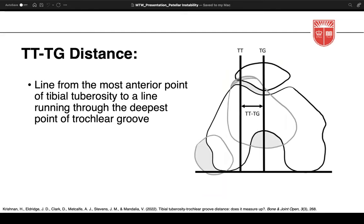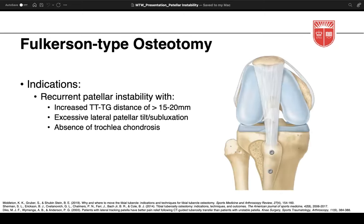The TT-TG distance is found by drawing two lines — one through the anterior most portion of the tibial tuberosity and another through the deepest portion of the trochlear groove. A more lateralized tibial tuberosity with an increased TT-TG distance suggests an increased lateral force vector on the patella. Indications for a Fulkerson osteotomy: recurrent instability with an increased TT-TG distance greater than 15 to 20 millimeters. It has also been shown to successfully address lateral patellar tilt.